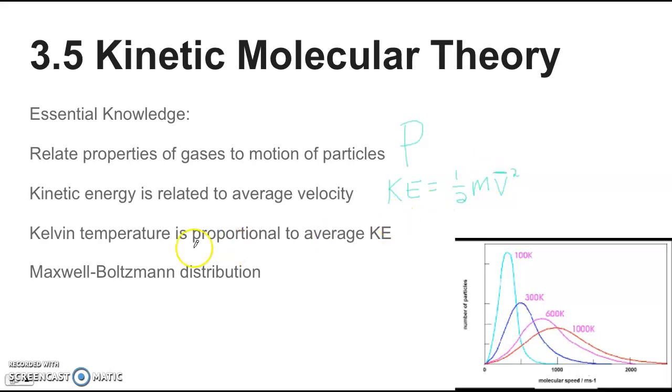And now one thing you want to understand is that this is average velocity. So that even when you have higher temperature gases, you're still going to have some particles that are moving slow. On average, you're going to have particles that are moving faster. But understand there's a distribution there. But if you have higher temperatures, that generally leads to faster moving particles on average. And then that also leads to Maxwell-Boltzmann distribution, where this is a picture of what's happening there.